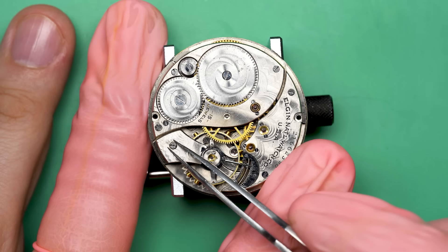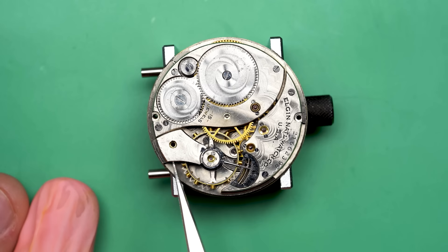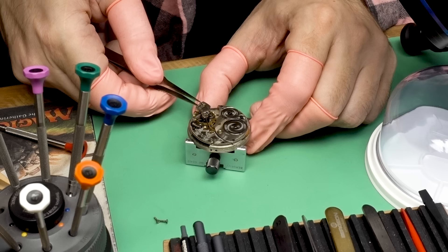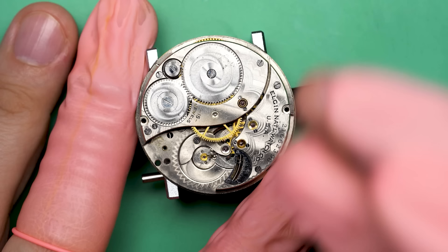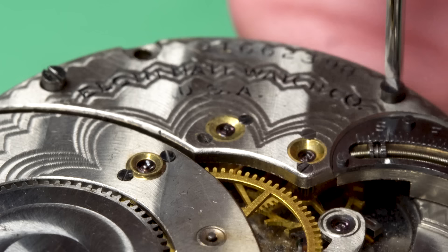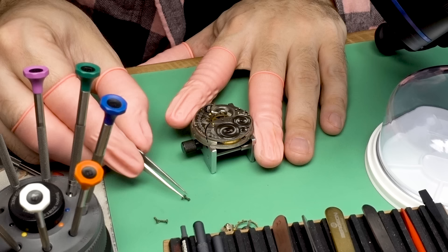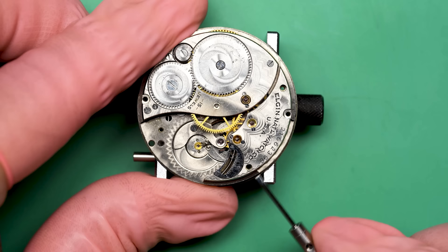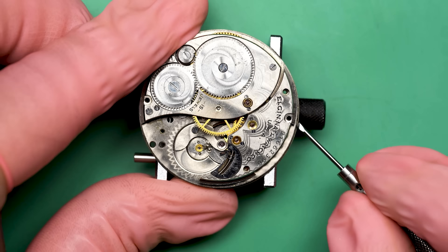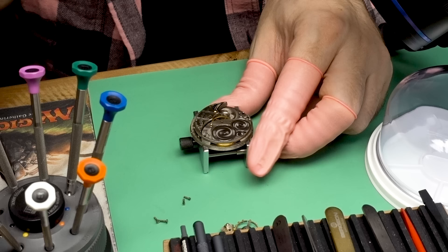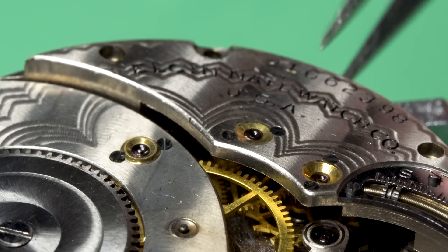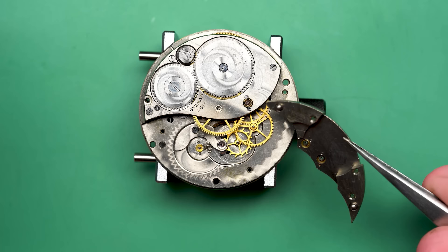We'll start by removing the balance. It's always a pleasure working on these pocket watches because they're so big that you can just see everything. They're relatively simple for watches. There's no dates or anything like that on them. Also, the level of finishing is quite high, especially given that this wasn't a super fancy pocket watch. This was a pretty standard issue type watch that you would get.